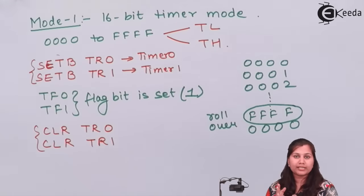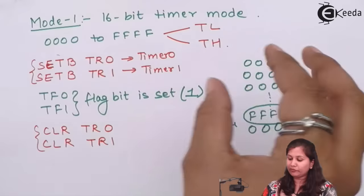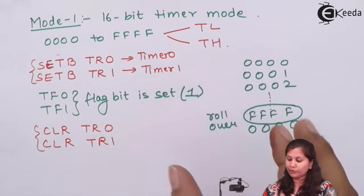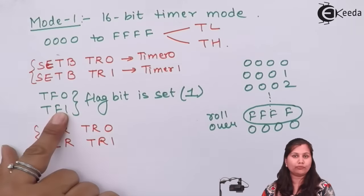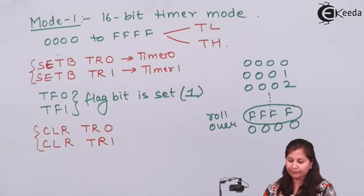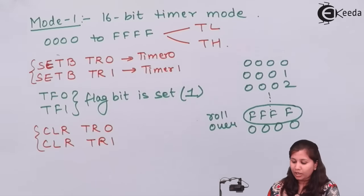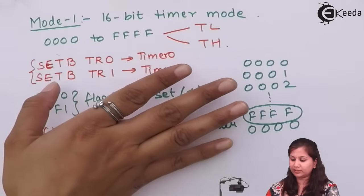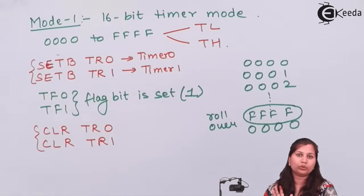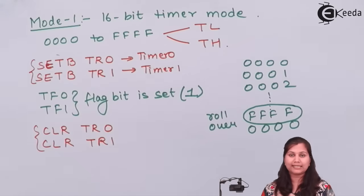In Mode 1, the first step is to load the 16-bit count value into the two 8-bit registers, then start the timers. The timer counts up, and when it reaches FFFF, it rolls back to 0000 with the overflow flag bits set. To reset and restart the process, the programmer must reload the 16-bit count into the two registers and start the timers again. This was Mode 1, the 16-bit timer mode.